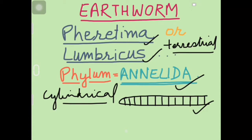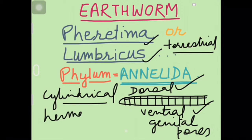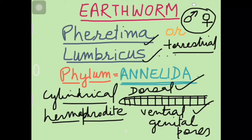Aur upar agar body dorsal wali dhekho to ek line milti hai dorsally. Center mein ek line hoti hai jo longitudinally chalti hai, jo actually dorsal blood vessel hai. Aur niche yani ventral area mein aapko milenge genital pores is animal mein. Yeh ek hermaphrodite animal hai. Yani ismein ek hi animal mein male bhi milega aur female bhi. Dono ke gametes aur organs ek hi animal mein milenge.